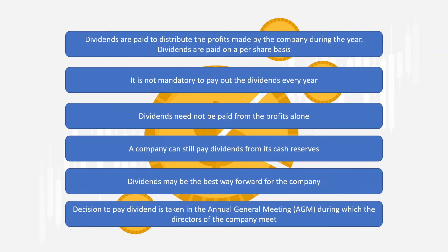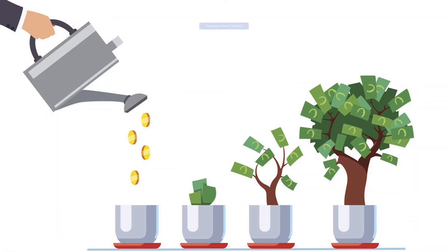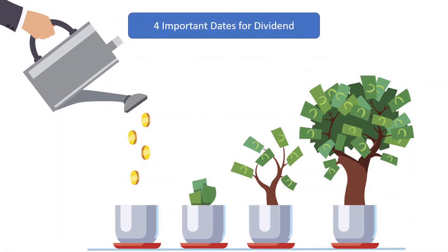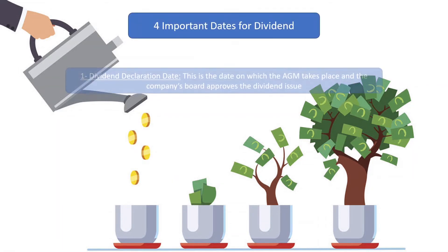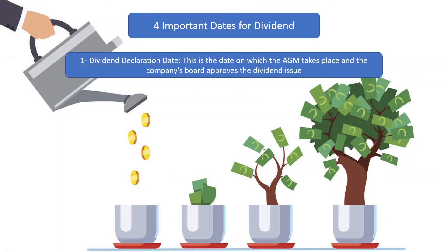There are four important dates in case of a dividend given by a company, which we will discuss in the next section. The first one is the dividend declaration date. This is the date on which the annual general meeting takes place and the company board approves the dividend issue.